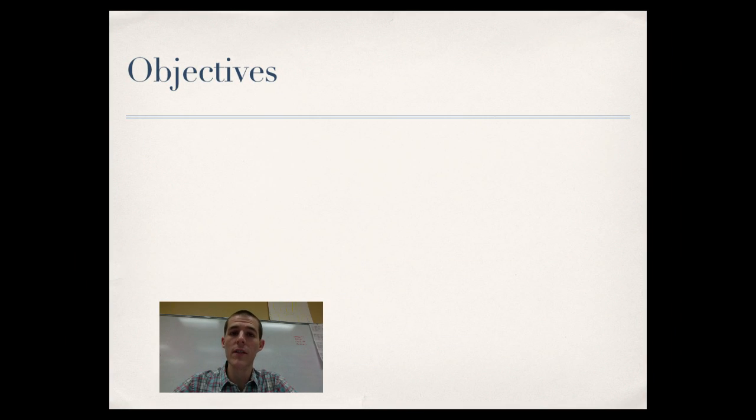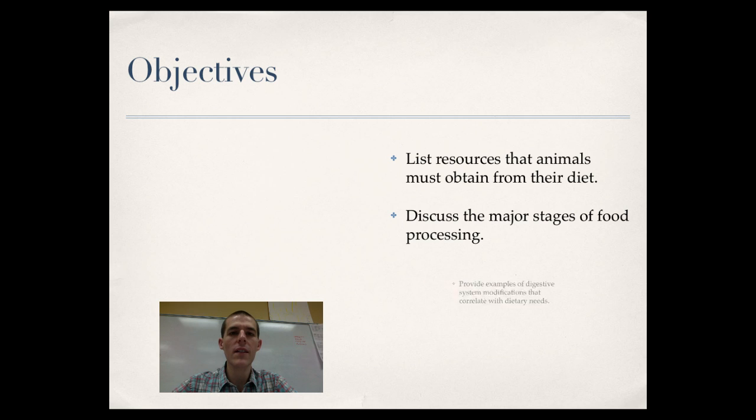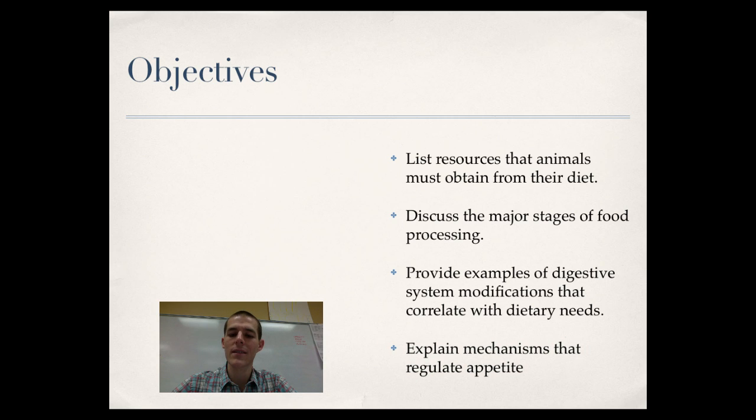There are actually four objectives today. By the end of this video you should be able to: first, list resources that animals must obtain from their diet. Second, discuss the major stages of food processing. Third, provide examples of digestive system modifications that correlate with dietary needs. And finally, explain mechanisms that regulate appetite. So without further ado, let's go ahead and get going.